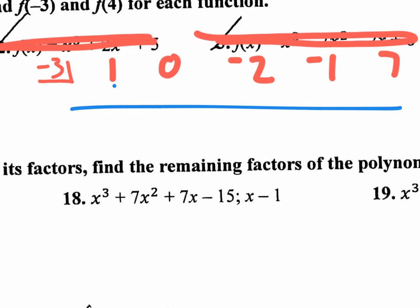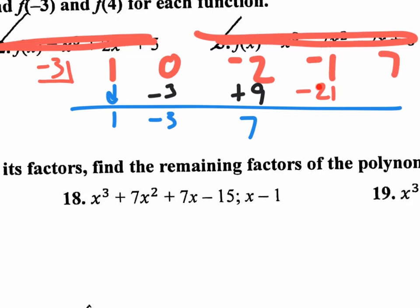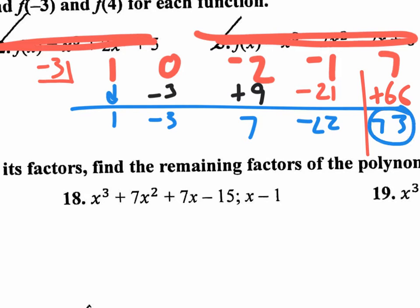Bring down the one. Negative three times one is negative three. Zero plus negative three is negative three. Negative three times negative three is positive nine. Negative two plus nine is seven. Negative three times seven is negative 21. Negative one plus negative 21 is negative 22. Negative three times negative 22 is positive 66. Seven plus 66 is 73. Remember, in synthetic substitution the last number is your final answer — so f of negative three equals 73.